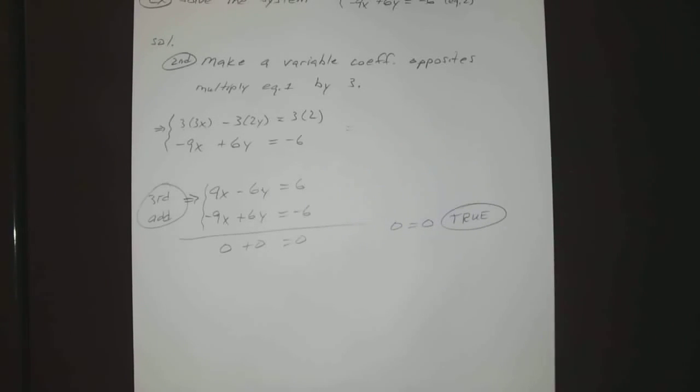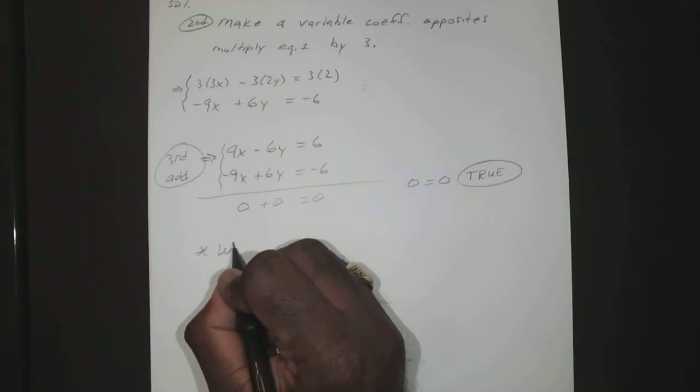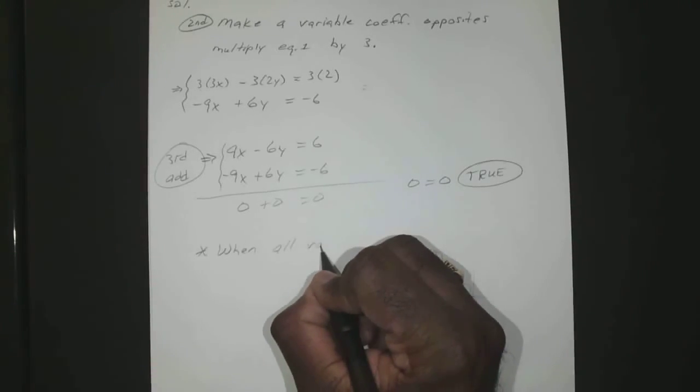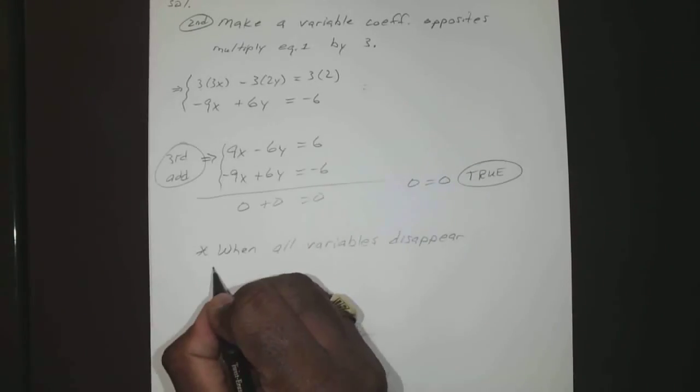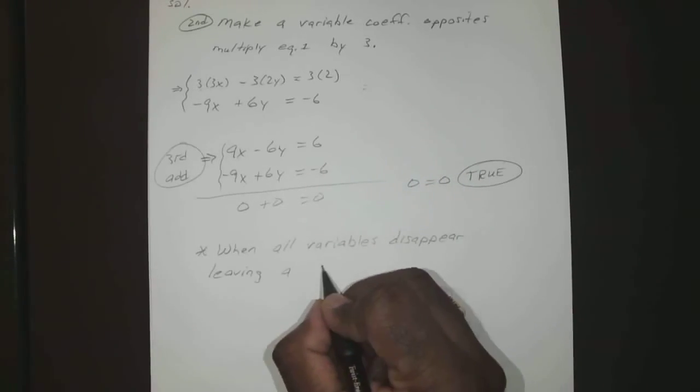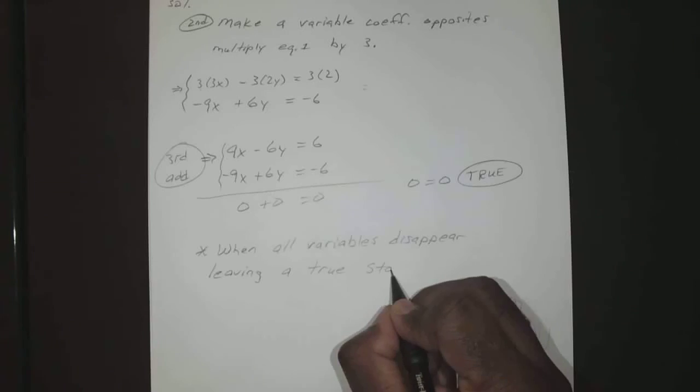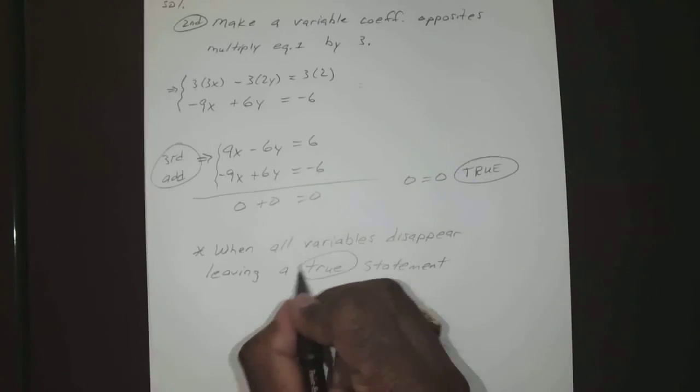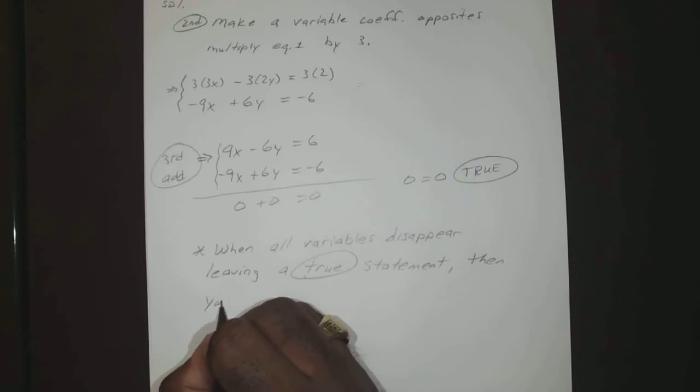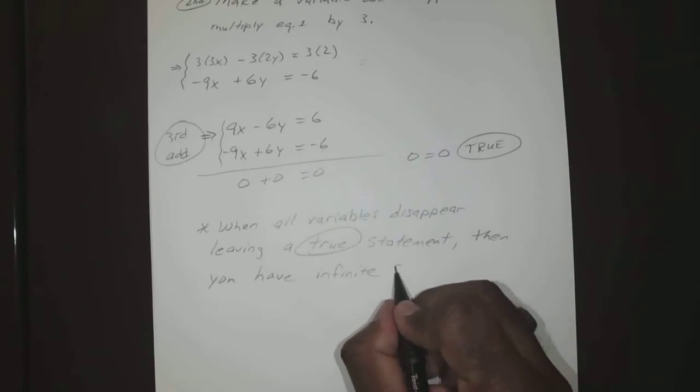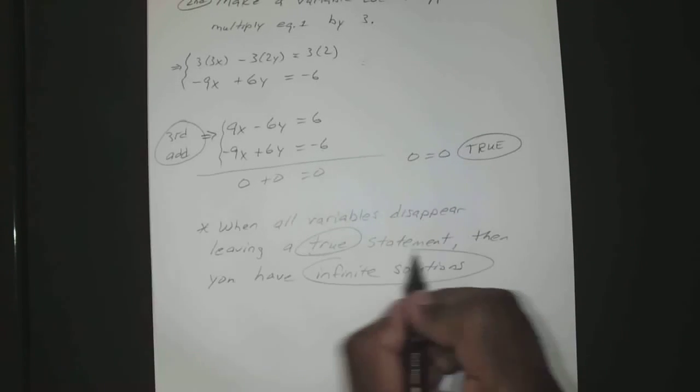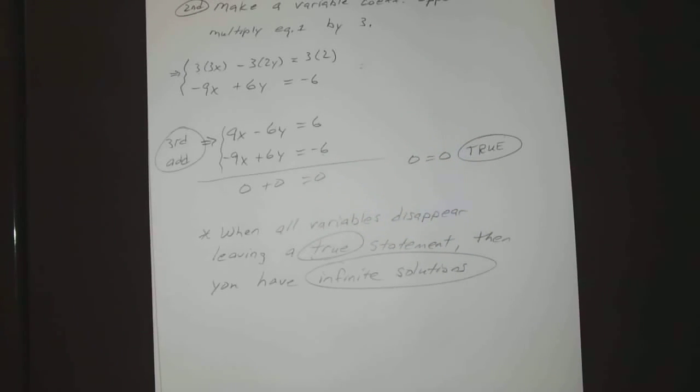So just like before, when all the variables disappear and you're left with a true statement, that's when you know it's dependent or you have an infinite number of solutions. When all variables disappear, you have infinite solutions or dependent system.